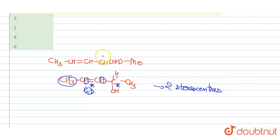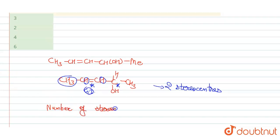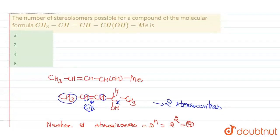Now we check if there is any symmetry in this molecule. There is no plane of symmetry or center of symmetry. So the formula for the calculation of the number of stereo isomers is: number of stereo isomers = 2^n, where n is the number of stereo centers. Here n = 2, so 2² = 4. The number of stereo isomers is 4.